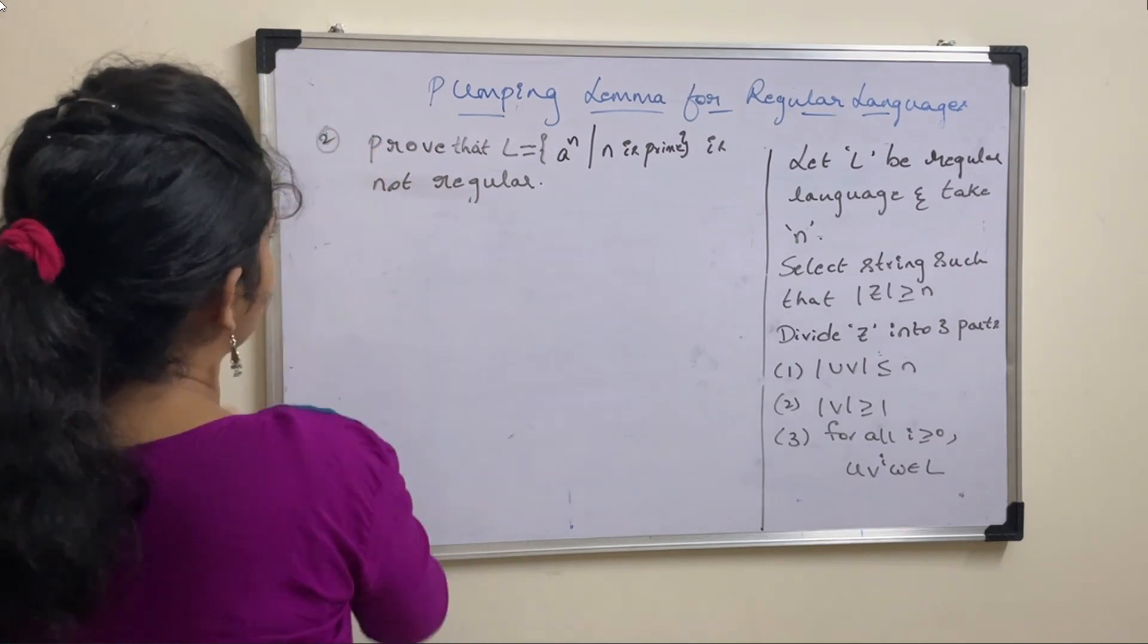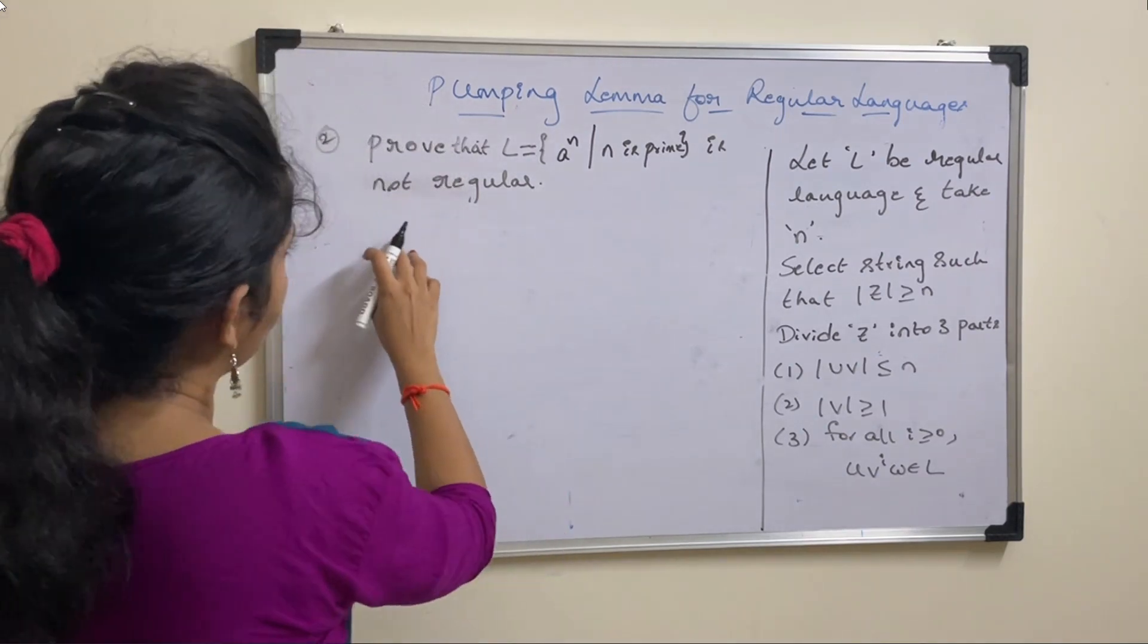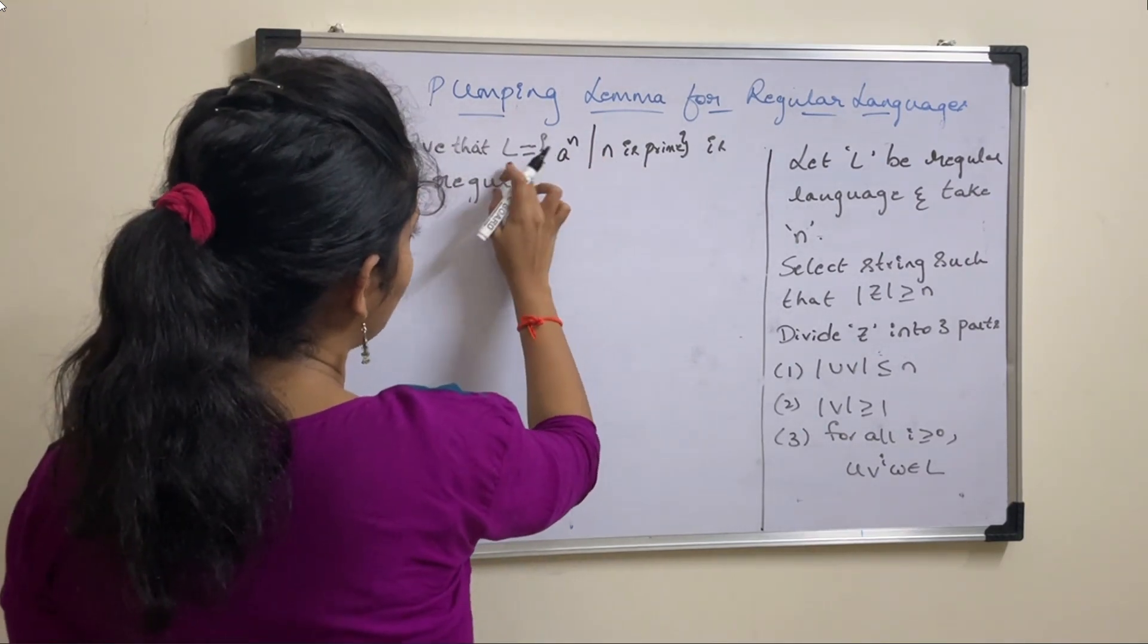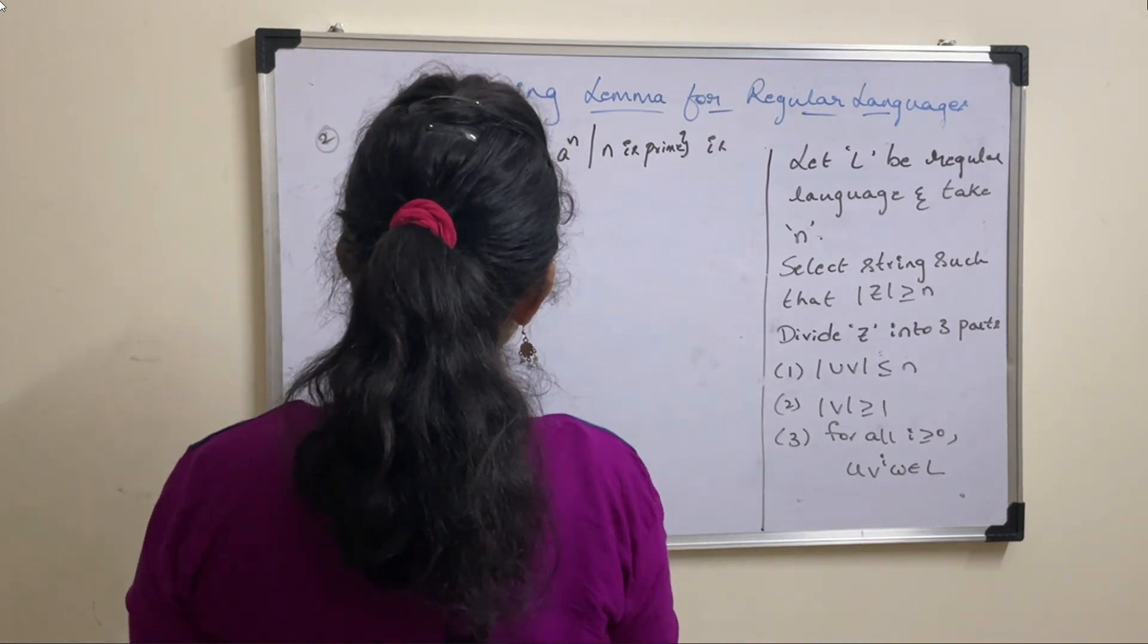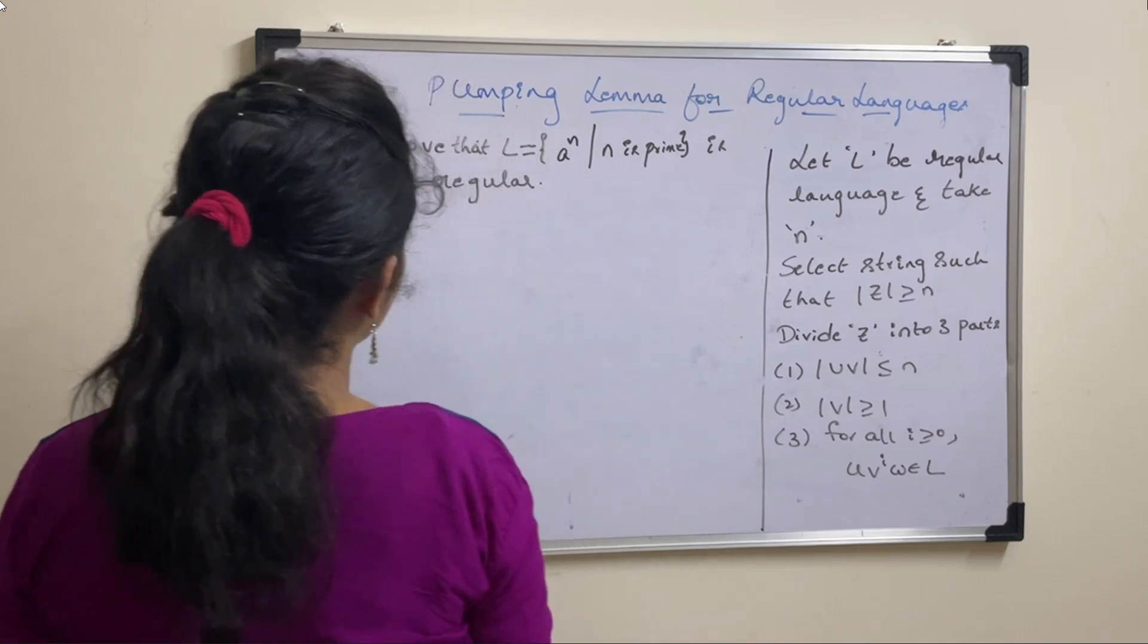In this video we will see a second example. Here we need to prove that the given language L equal to A to the power N, where N is a prime number, is not a regular language.